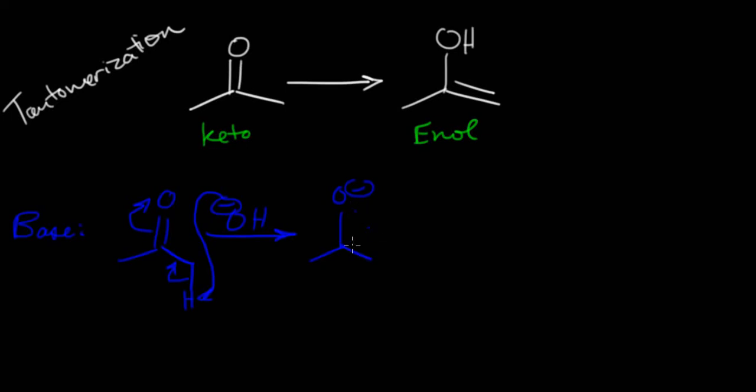We create an O minus and a double bond. And we can call this intermediate species right here, an enolate.